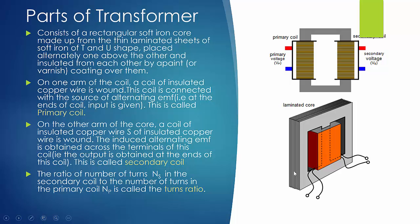These laminated sheets are insulated from each other by a paint or coating over them. On one arm of the core, a coil of insulated copper wire is wound and connected to the source of alternating EMF — this is the primary coil. On the other arm, another insulated copper wire is wound, known as the secondary coil, and across its terminals we obtain the output voltage. The number of turns in the primary coil differs from the number of turns in the secondary coil.